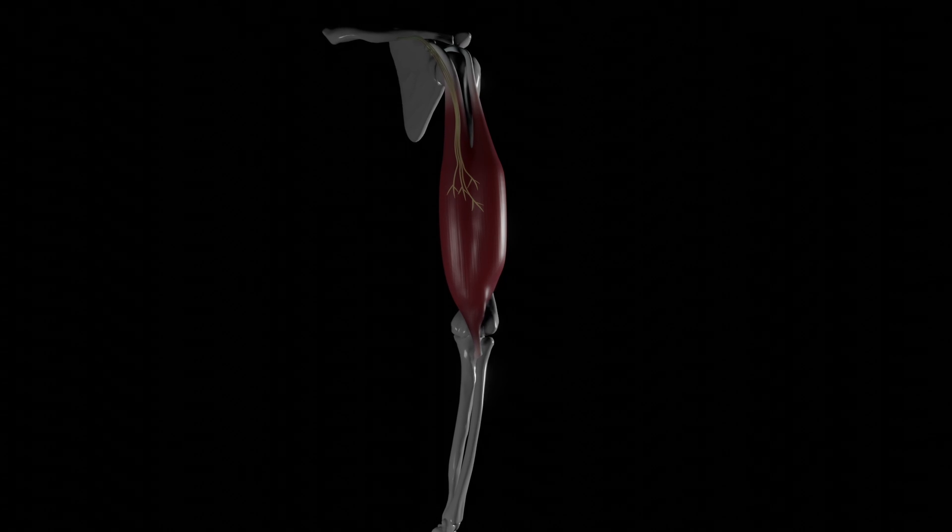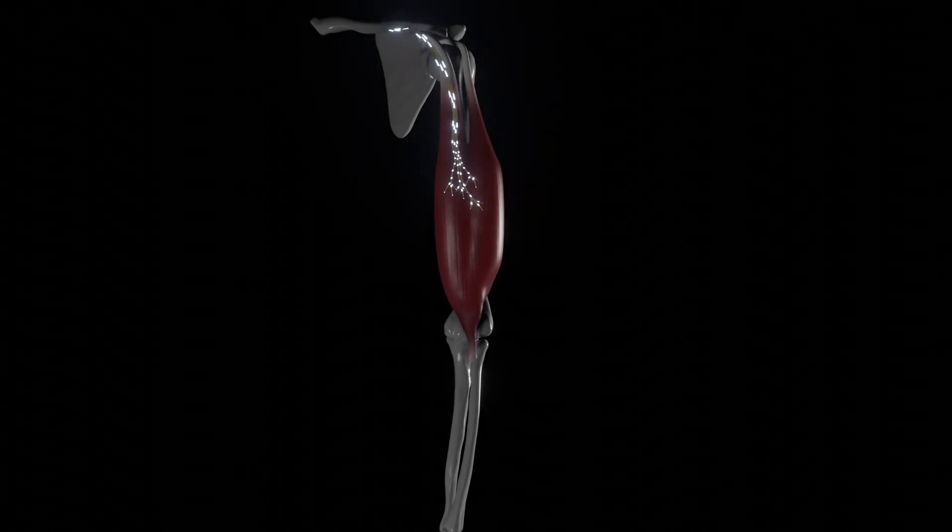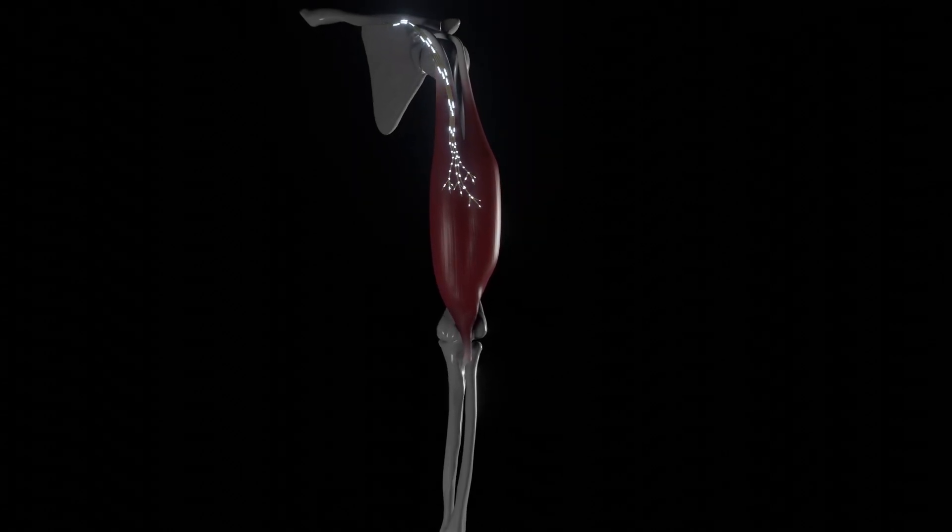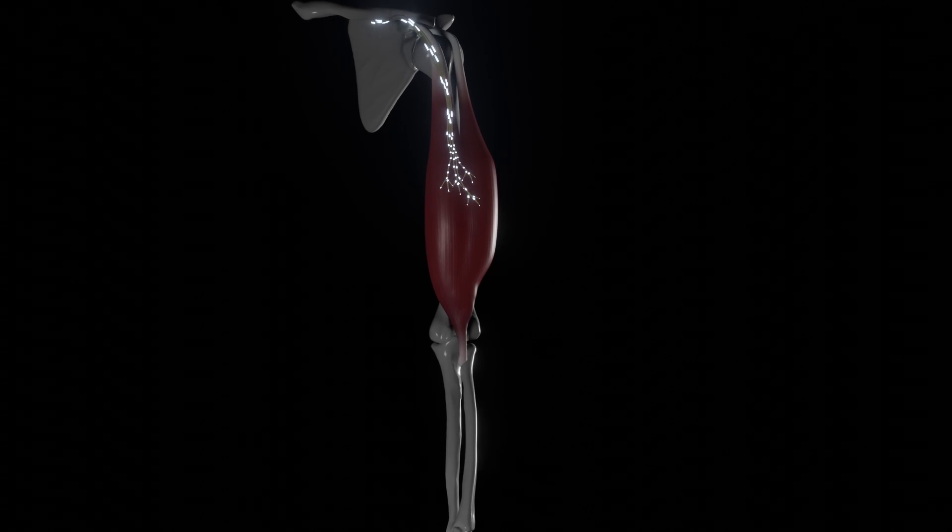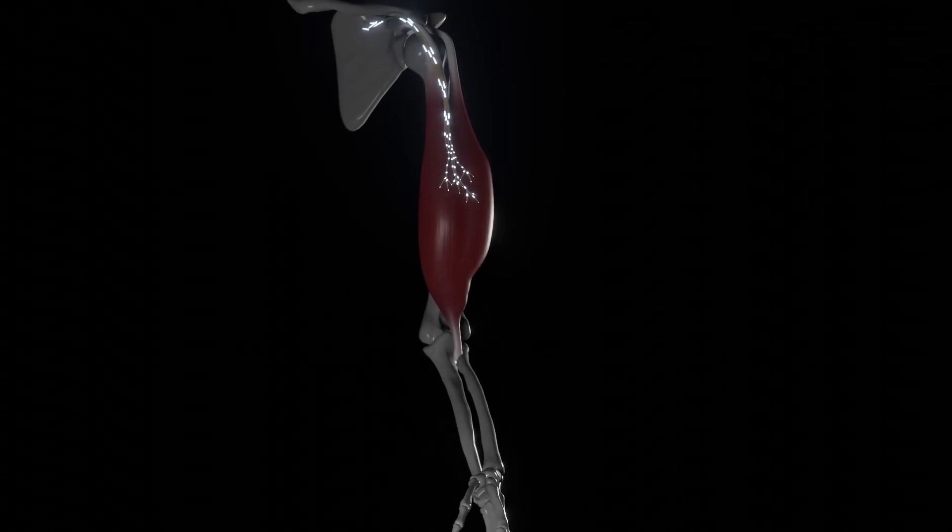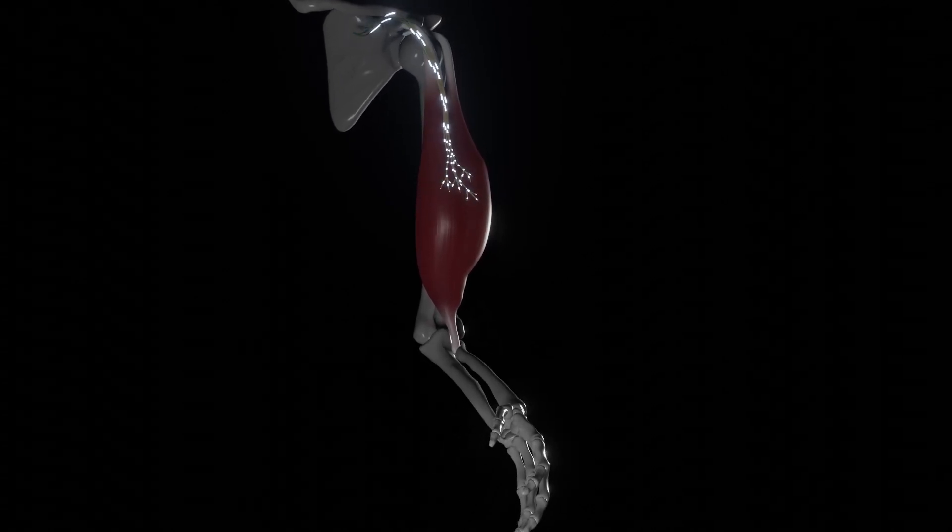signals have to travel from the brain via the spinal cord to the corresponding muscles. Once these signals reach the muscle fibers, they trigger a contraction. The resulting forces are transferred to the bones via tendons.